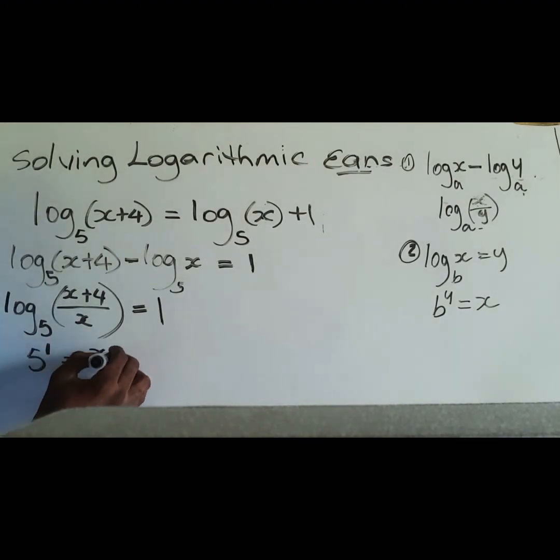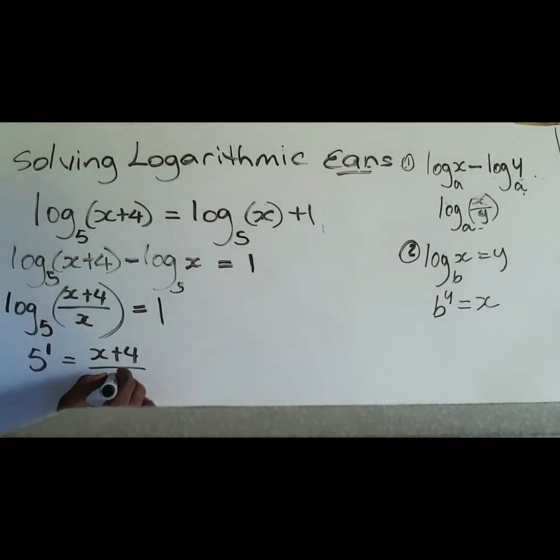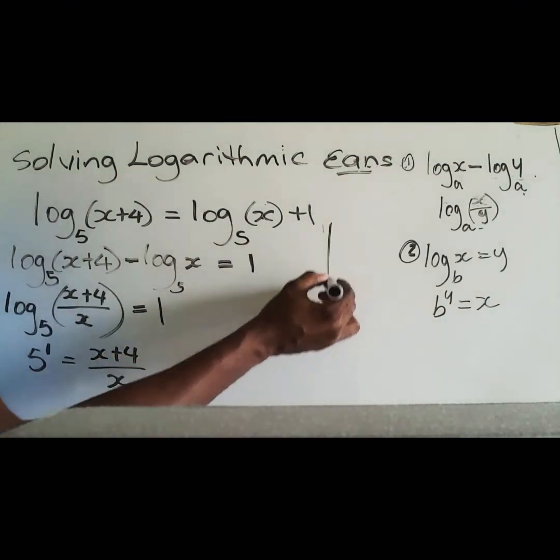Which means that 5 raised to the 1 is going to equal x plus 4 over x. And what we're going to do now is just normal solving. I might need a little bit of space.